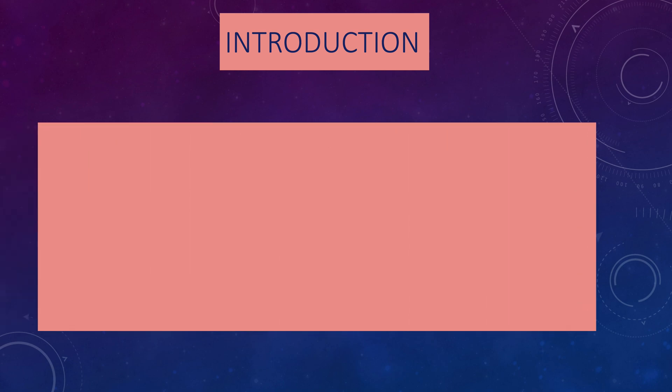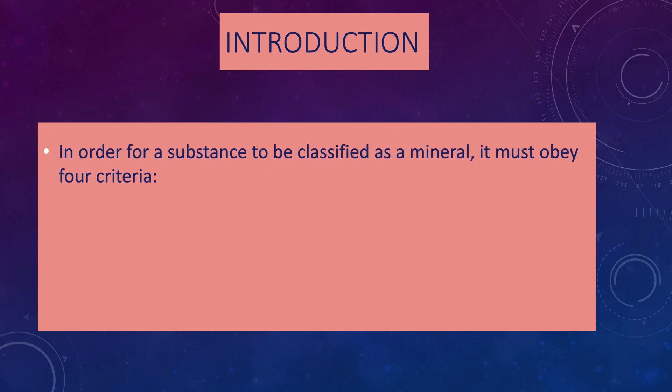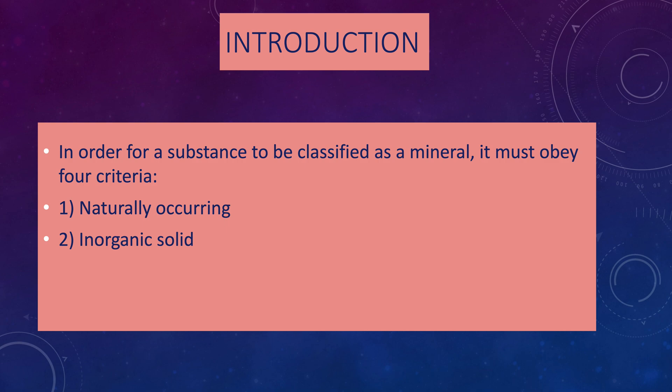In order for a substance to be defined or classified as a mineral, it has to obey four criteria. Number one, it has to be naturally occurring — that means the substance is found naturally here on Earth and forms in a natural way. Number two, minerals are inorganic solids, meaning they are not alive and were never tied to life.